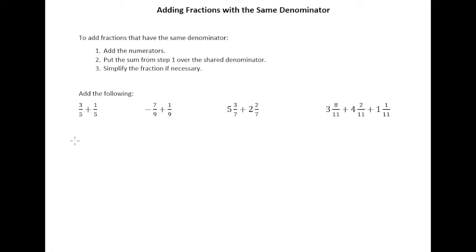To add fractions that have the same denominator, we add the numerators or the tops, put the sum over the shared denominator, and then if there's any simplifying to do we do that. So in this first example we're simply taking 3 plus 1, add those tops, and putting that sum over the denominator they share which is 5, and so we end up with 4 fifths as the answer.